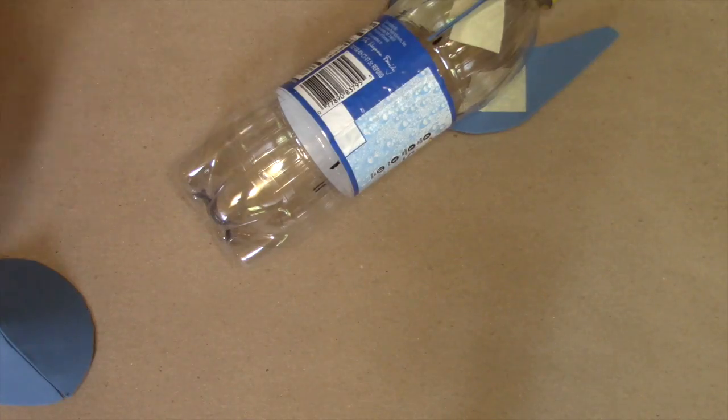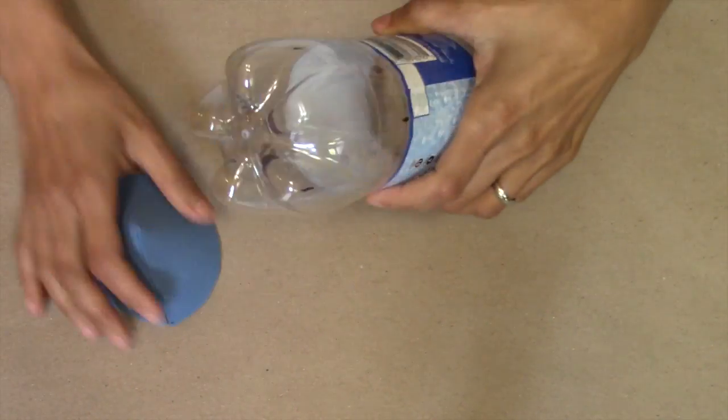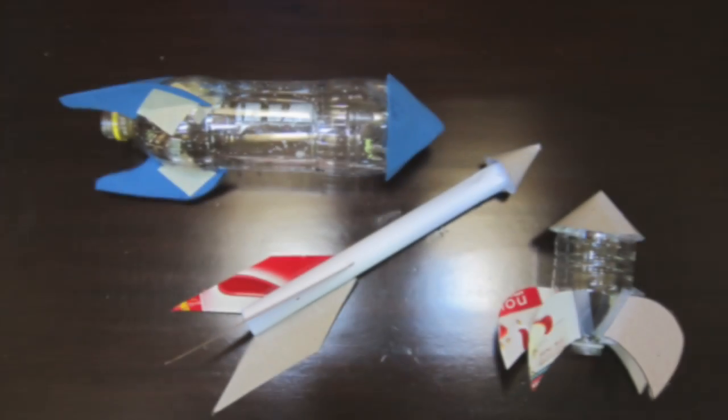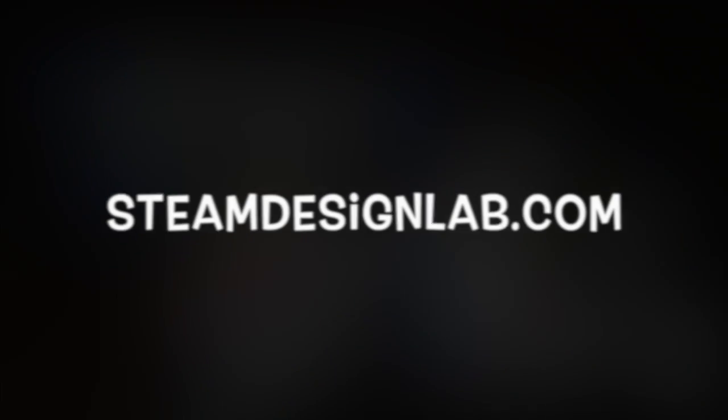I would recommend using a low temp hot glue gun to attach the cone to the bottle when you're working with foam. For more information on this project and others, check out our website at steamdesignlab.com.